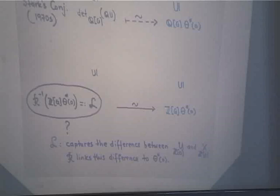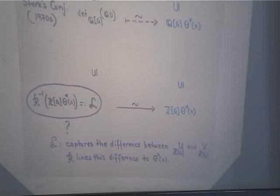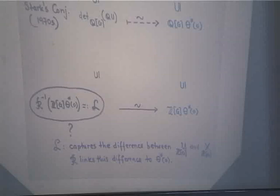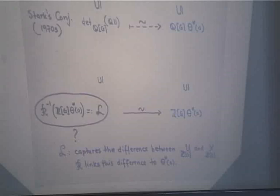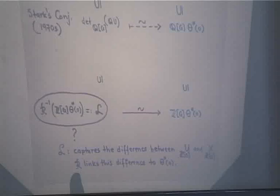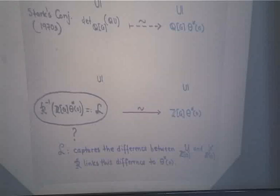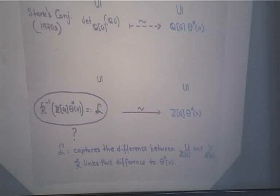What does L do? It captures the difference between this well-understood Z[G]-module X (divisors of degree zero supported by S) and the not-so-well-understood module U over Z[G] (the group of S,T-units). The regulator R is supposed to tell you that this difference is in fact hidden in the special value θ*(0) of your G-equivariant L-function. The regulator links the difference to the special value.